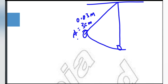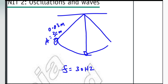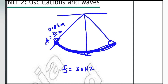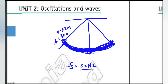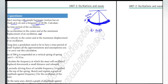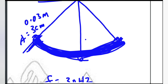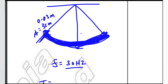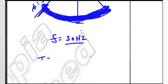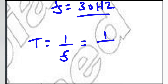The object has a frequency of 30 Hz per second. The time period of oscillation is one over frequency — one over thirty — which equals 0.03 seconds.